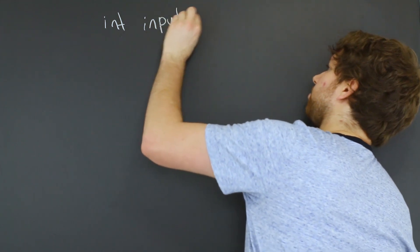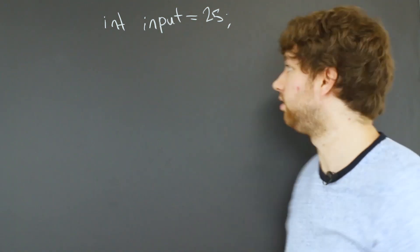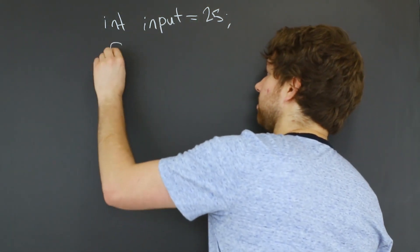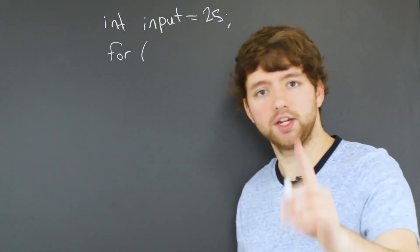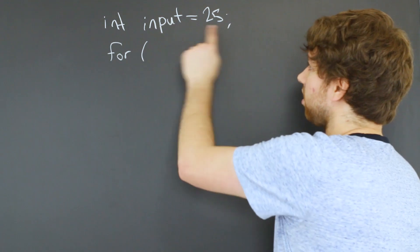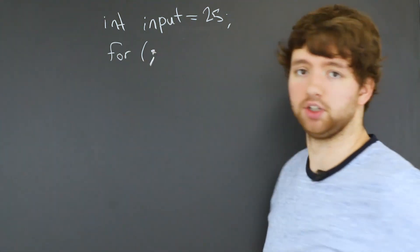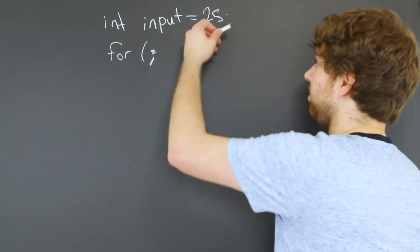So we start with the input. And in this situation, we're just going to assign it a value. But obviously, eventually, we're going to want to get that from input. And our loop is going to look like this. So we have a for loop. We need to initialize what we already initialized because this is the number we're starting with. So you don't actually have to do initialization. You can just put a little semicolon, which skips the initialization because that already happened up here.